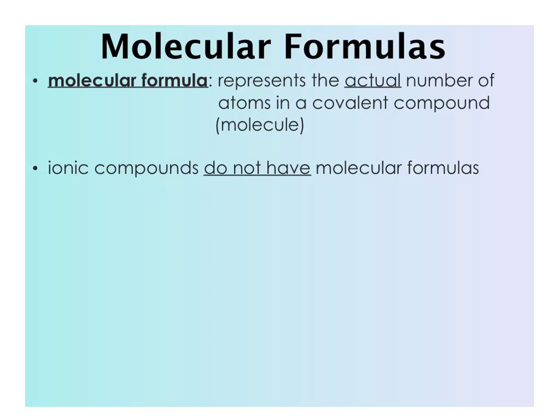A molecular formula represents the actual number of atoms in a covalent compound, or a molecule. That's why it's called a molecular formula. Ionic compounds do not have molecular formulas — ionic compounds are always written as empirical formulas.